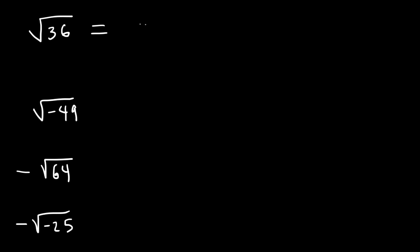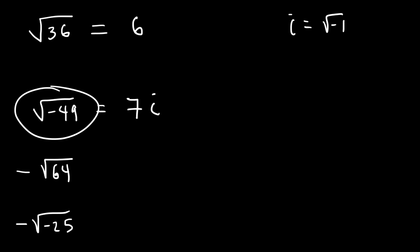The square root of 36 is simply 6 — it's a real number. The square root of a negative number is not a real number; it's an imaginary number. So the square root of negative 49 doesn't give you a real number, it gives you an imaginary number.